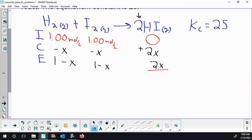I'm going to write the equilibrium law expression now. Kc, which we know is 25, is going to be concentration of hydrogen iodide gas, and that's going to be squared, divided by our hydrogen and iodine concentrations.